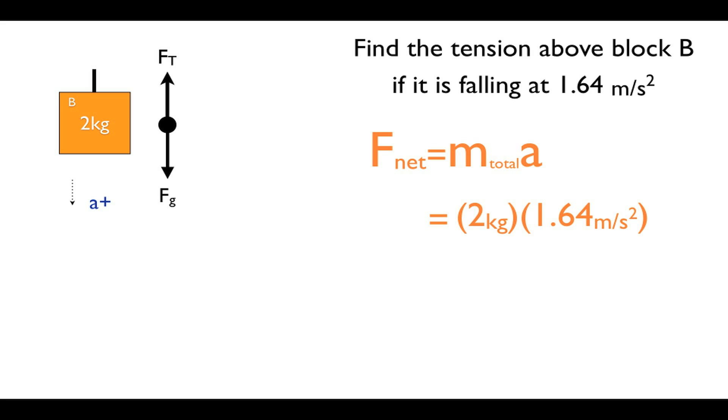To find the net force, we simply add up all our y-direction forces from the free body diagram. Since the block is falling downwards, we choose the force of gravity to be positive, and then we subtract tension.